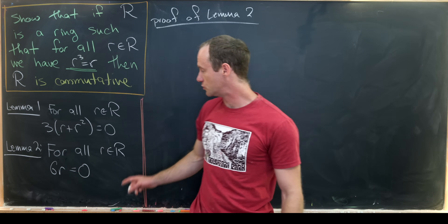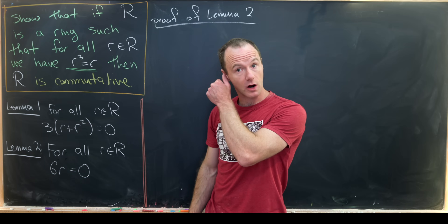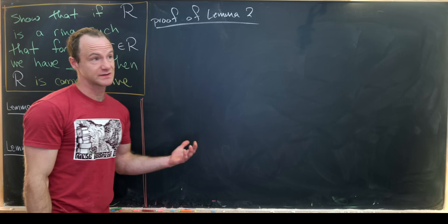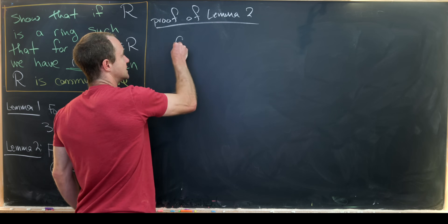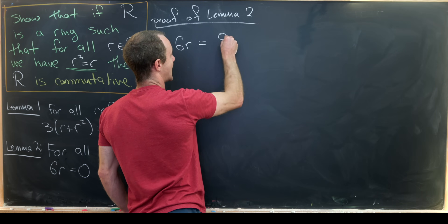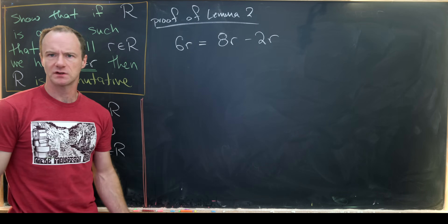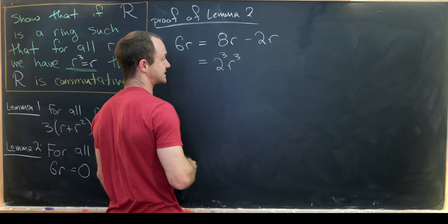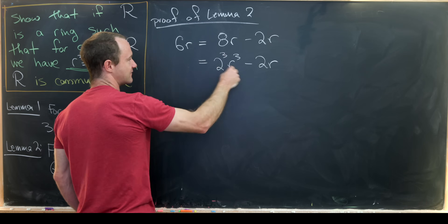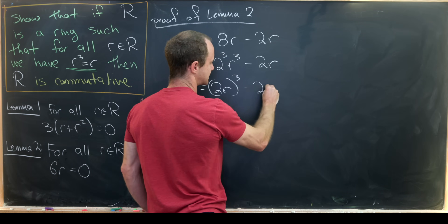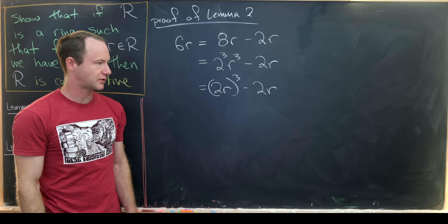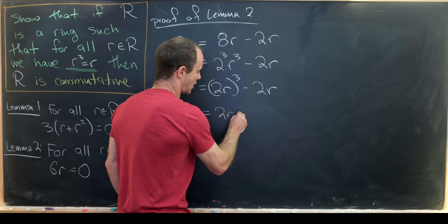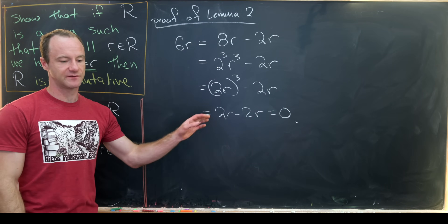Lemma 2 says: for all little r in R, we have 6r equals zero — i.e., adding r to itself six times gives zero. To prove it: write 6r as 8r minus 2r, rewrite 8r as (2r)³ minus 2r, factor out the cube to get (2r)³ minus 2r. Since 2r is an element of R, it cubes to itself, giving 2r minus 2r, which is zero.